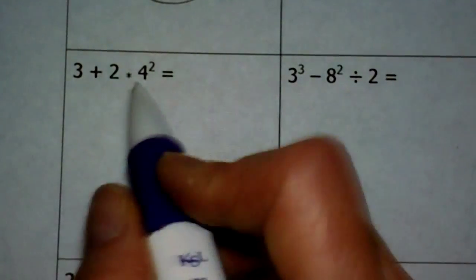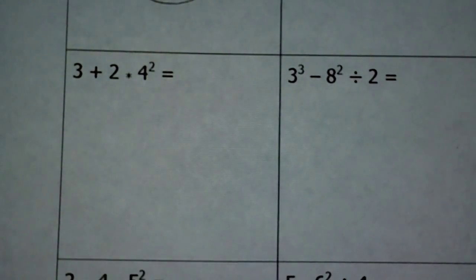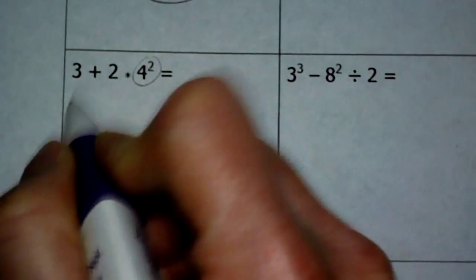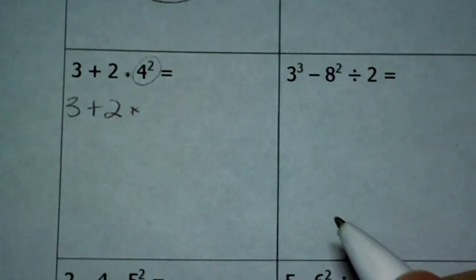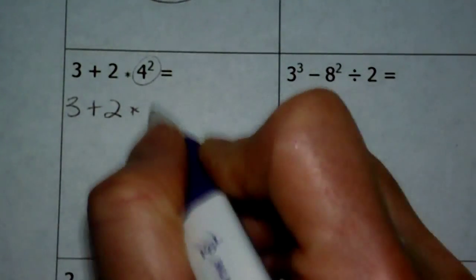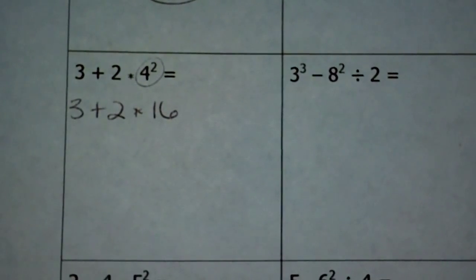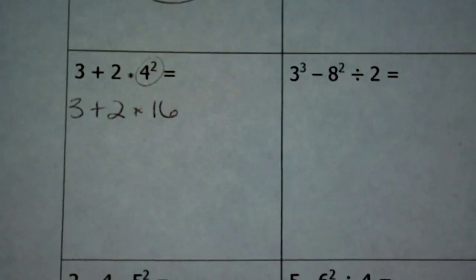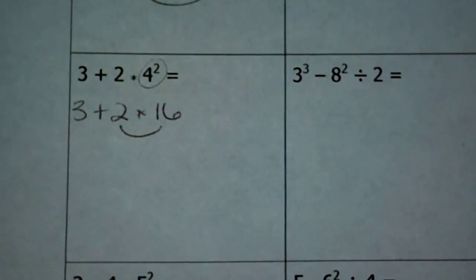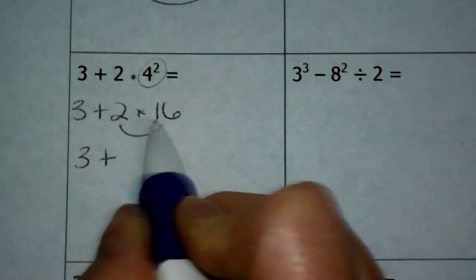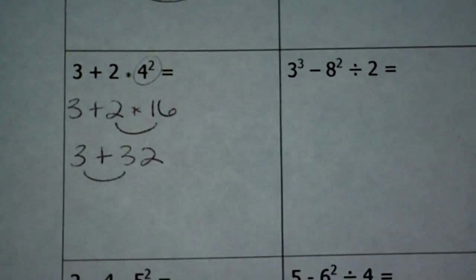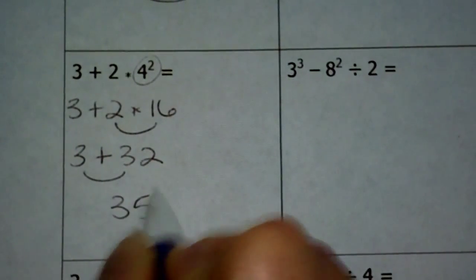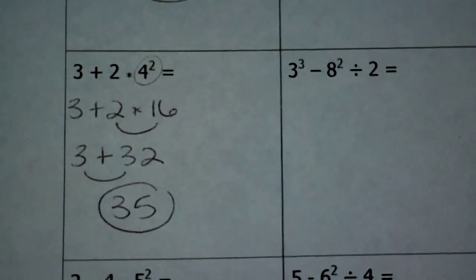Next — there aren't any parentheses, but I do see some exponents, so we'll take care of those first. I'm going to rewrite this as 3 plus 2 times 4 squared. 4 squared means 4 times 4 — not 4 times 2 — so 4 times 4 is 16. Now from here, most people want to do 3 plus 2, but you can't do that next. You have to solve multiplication before you can add. So I'm really taking 3 plus 16 times 2, which is 32. Then 3 plus 32 is a positive 35.